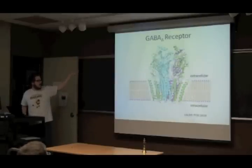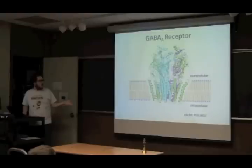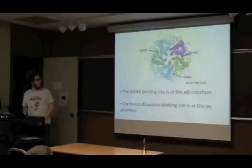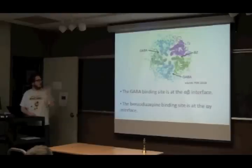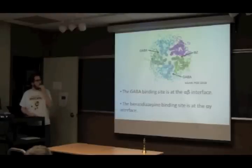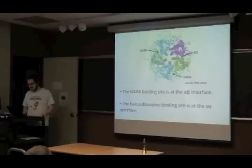Extracellular is outside the cell, intracellular is inside the cell. It's a membrane protein, so it sits in the membrane. When GABA binds it, it opens and chloride ions can come through the middle. This particular receptor is made of two alpha-1, two beta-2, and one gamma-2 subunit. GABA binds at the interface between the alpha and beta subunits, and benzodiazepines bind at a different site at the interface between the alpha and gamma subunits.